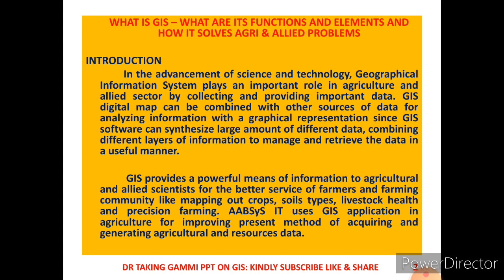Let us discuss the topic: what is GIS, what are its functions and elements, and how it solves problems. In the advancement of science and technology, Geographical Information System plays an important role in agriculture and allied sectors by collecting and providing important data. This digital map can be combined with other data sources for analyzing information with geographical representations, since this software can synthesize large amounts of different data, combining different layers of information to manage and retrieve data.